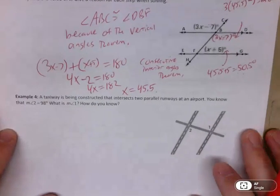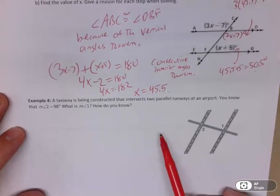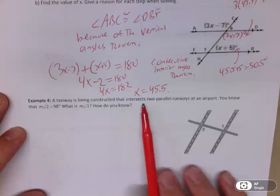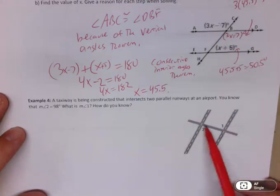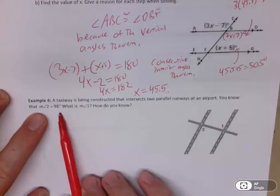All right, for this next one, it actually isn't as complicated as the one we just did. You just have to understand what it's asking for. So they're telling you you have this taxiway being constructed, and it intersects two parallel runways at the airport. So here are the runways, and here is the taxiway going across.